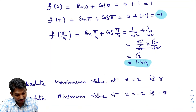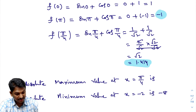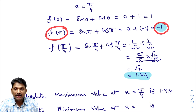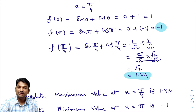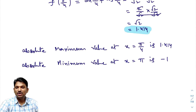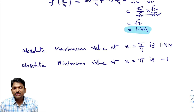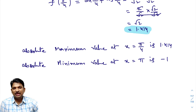Therefore, absolute maximum value occurs at x = π/4 and its maximum value is 1.414 (√2). Absolute minimum value occurs at x = π and its minimum value is -1. We do not use the first or second derivative test when the function is defined on a closed interval [a, b].